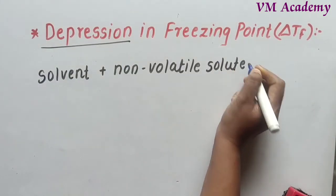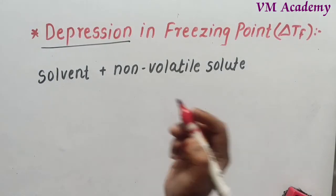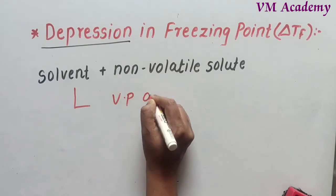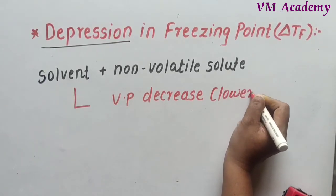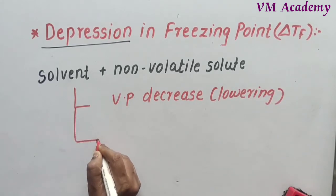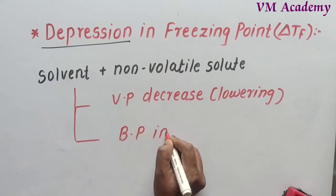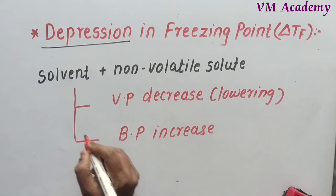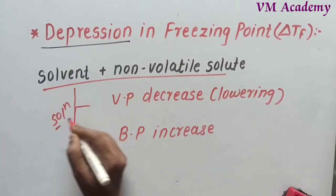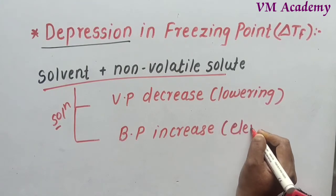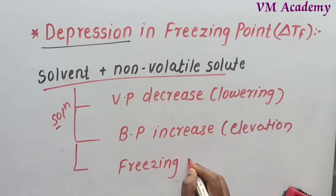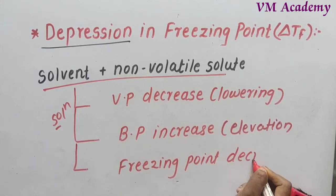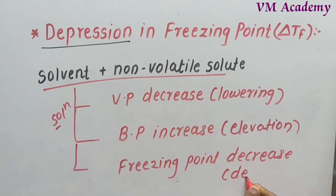The first effect is that vapor pressure is going to decrease — that is lowering of vapor pressure. The second effect: the boiling point of the solution increases — that is elevation of boiling point; elevation means increase. The third effect: the freezing point decreases — that is depression in freezing point; depression means it becomes less.